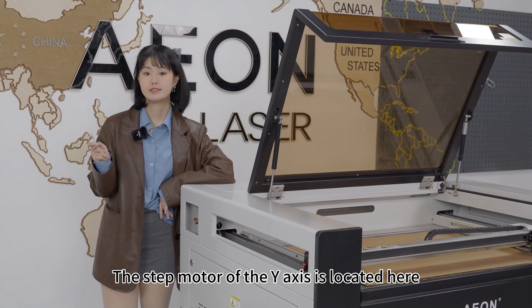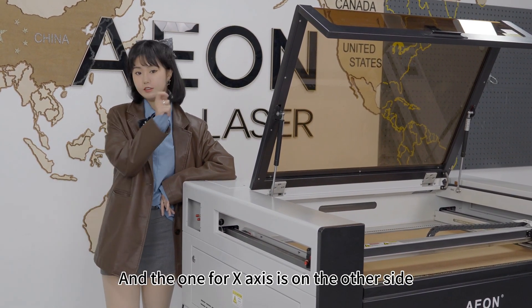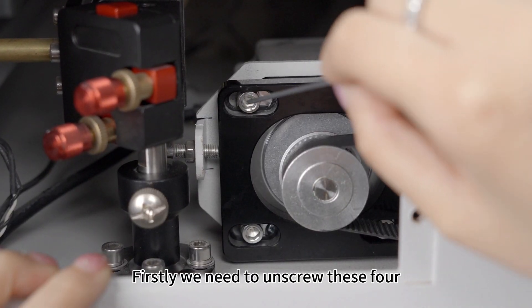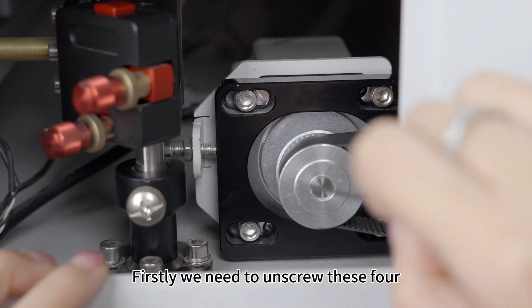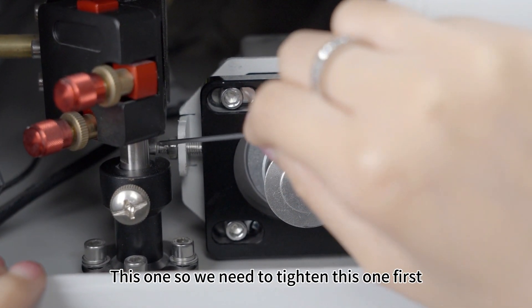The step motor of the y-axis is located here, and the one for x-axis is on the other side. Firstly, we need to unscrew these four. The tightness of the belt is actually controlled by this one.